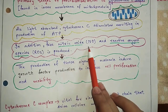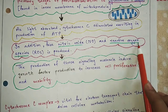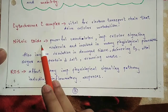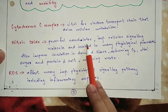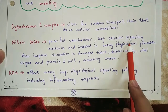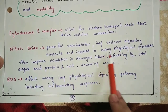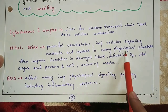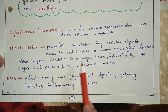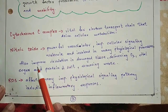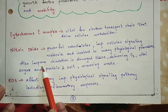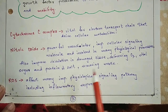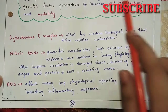Nitric oxide is a powerful vasodilator and is very important in cellular signaling. It involves many physiological processes. In damaged tissue, it improves circulation, delivering oxygen, vital sugars, proteins, and salts, and removing waste.